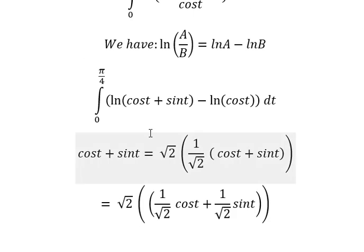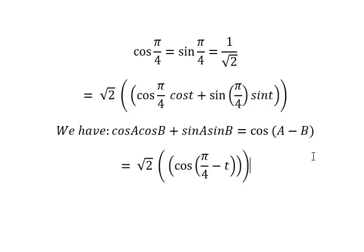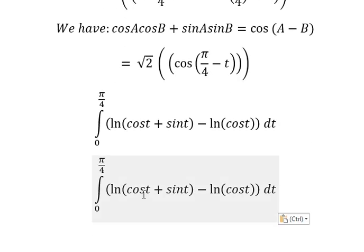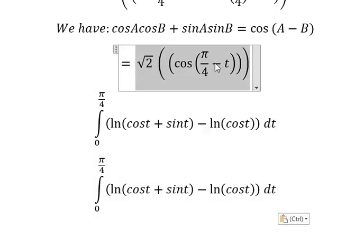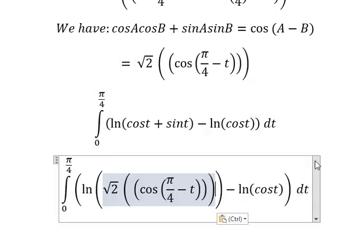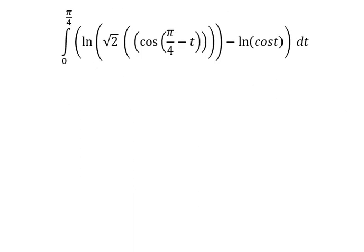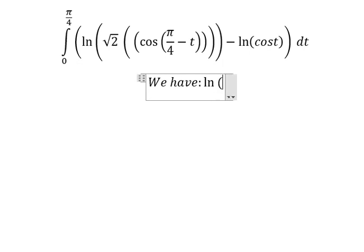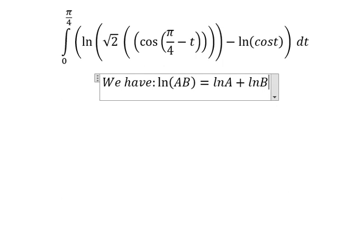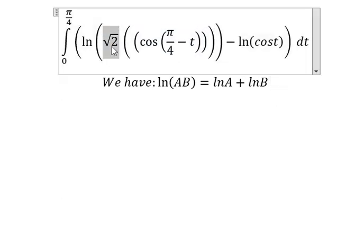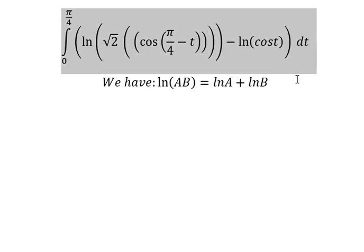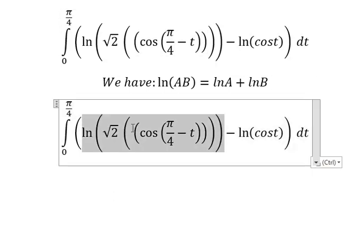Now we go back and change this expression into the cosine form. Next we apply the formula ln(ab) equals ln(a) plus ln(b), where this term is 'a' and this term is 'b'. Now we apply the formula and we have the result.